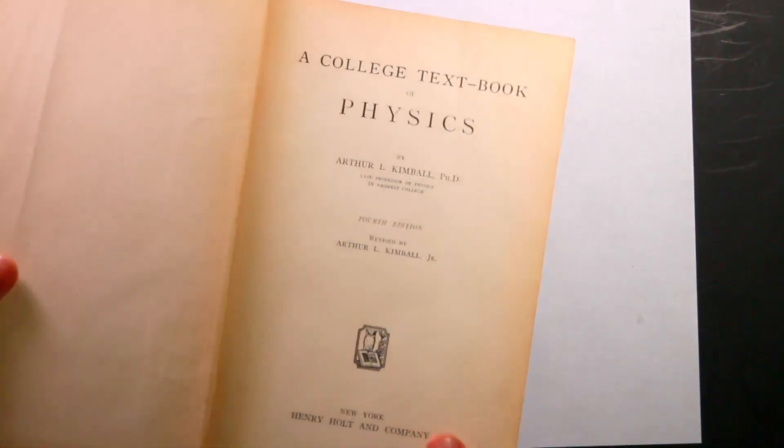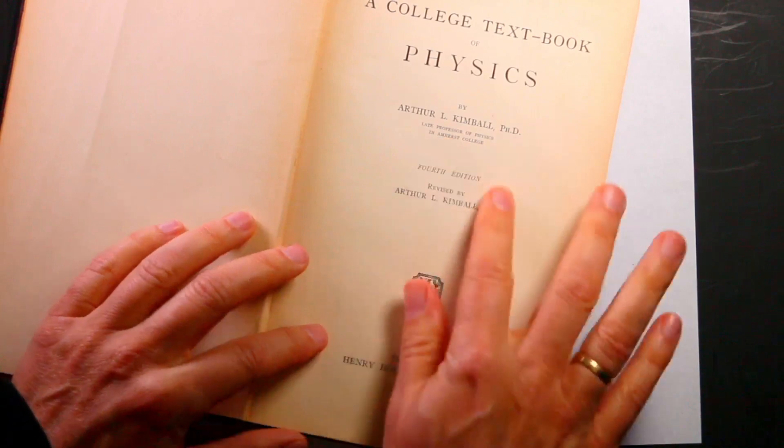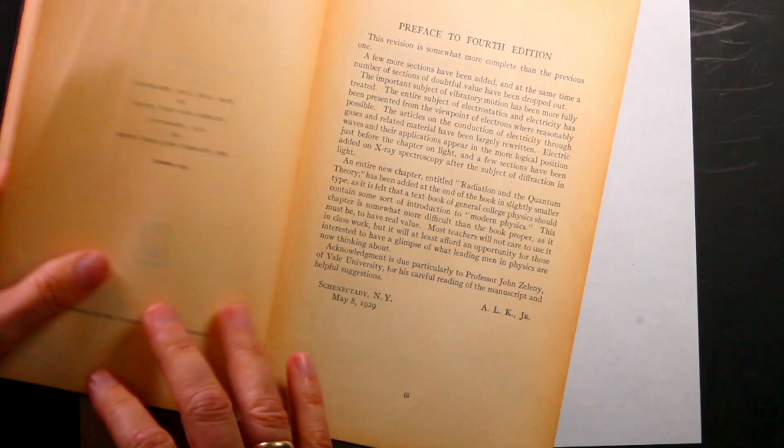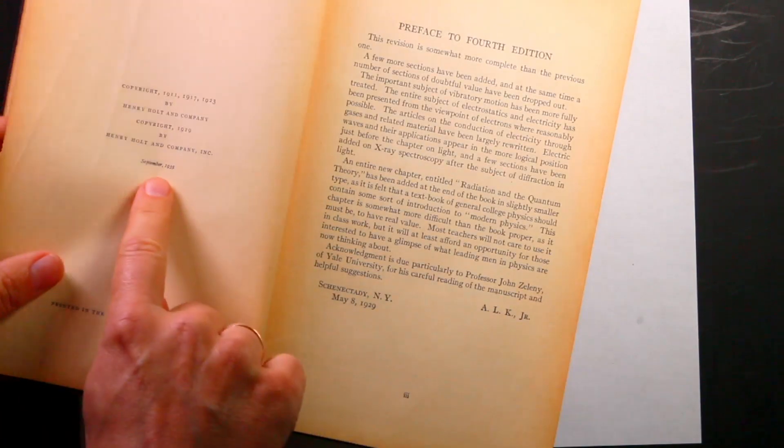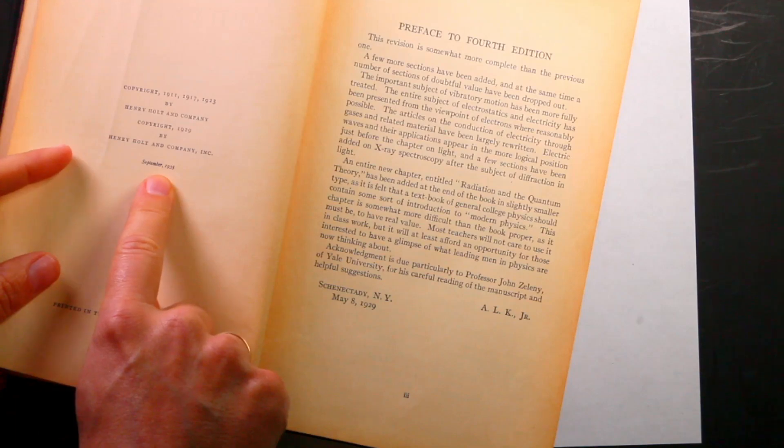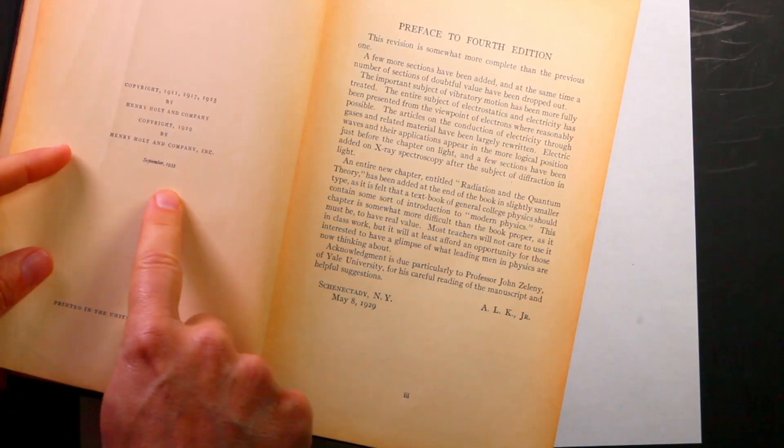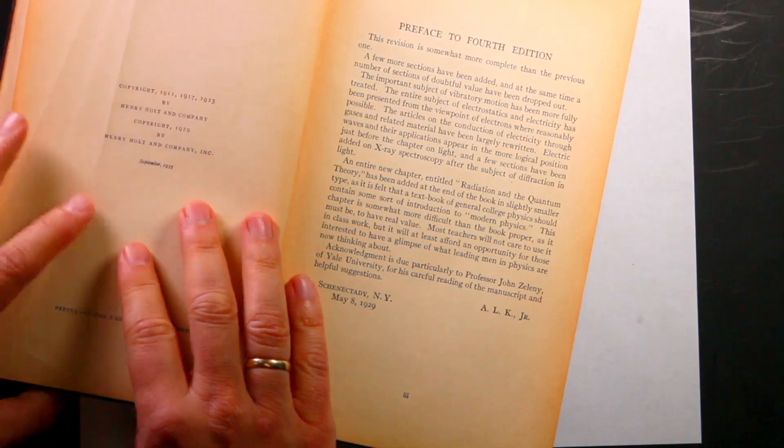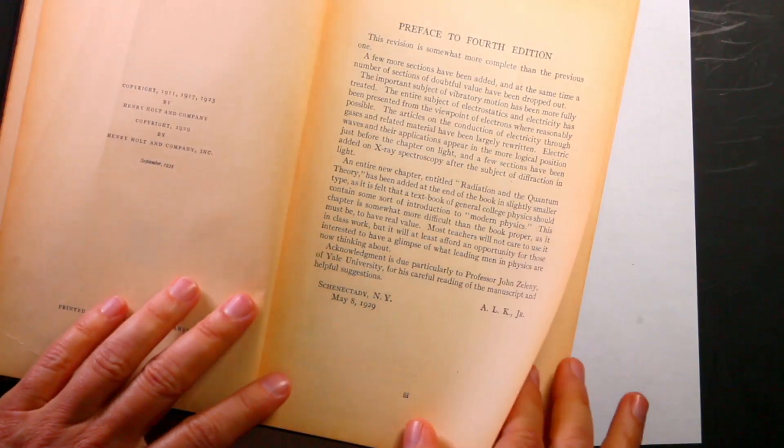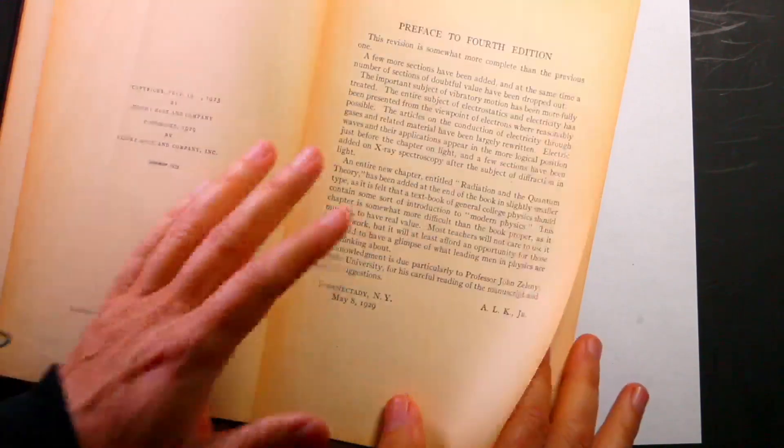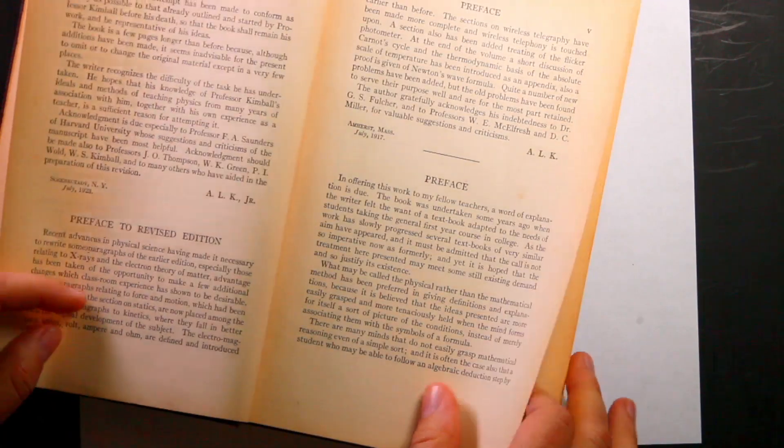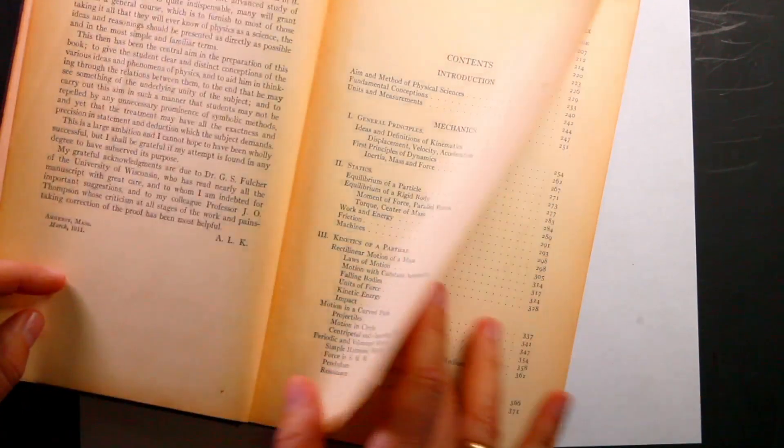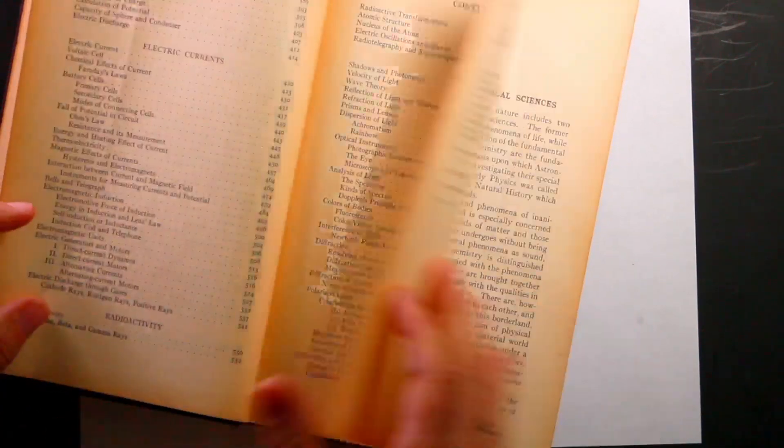First of all, let's just look at some of the cool things in this book. Kimball 1935 was the last edition that was printed of this. I think that's what that says. And then so here's a preface to the fourth edition. So this is an old physics book. Let's just look through it and look at some of the cool things that we can see.